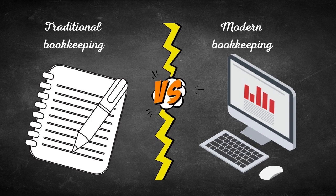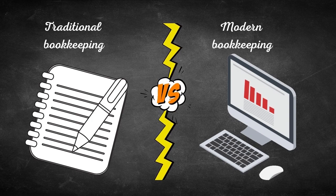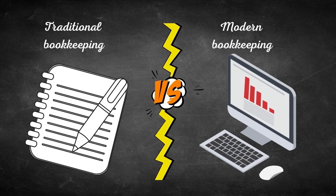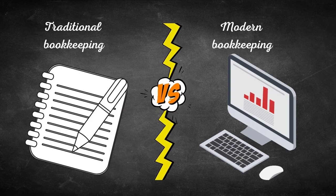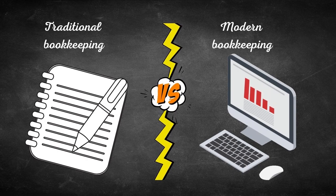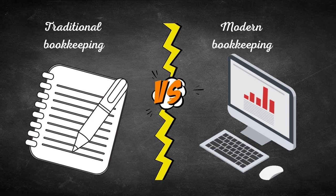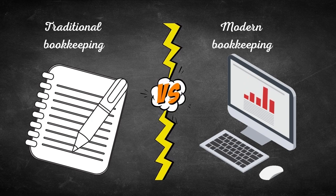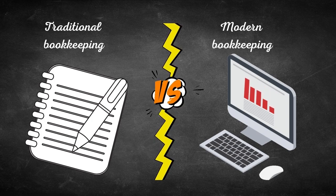The electronic accuracy also eliminates the errors that occurred when amounts were manually rewritten and calculated. As a result, the debits will always equal the credits and the trial balance will always be in balance. No longer will hours be spent looking for errors that occurred in a manual system.